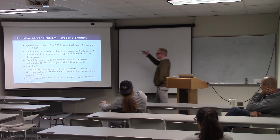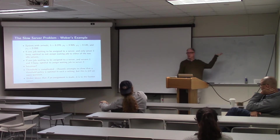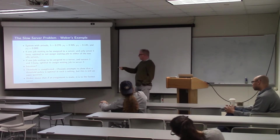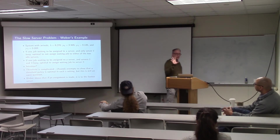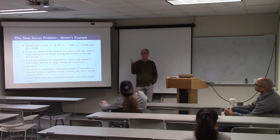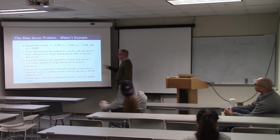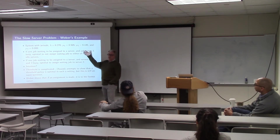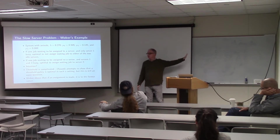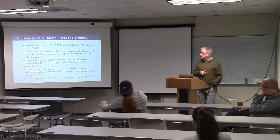So this threshold, if it exists, is complicated — it's not only on the number of jobs in the queue but depends on the other servers. If I have a hundred servers, this can become very combinatorially complicated. Weber shows that if an assignment is made, it's always made to the fastest server. The problem is it doesn't tell you whether to make an assignment or not for a waiting job. This is a nice open problem — showing that the threshold policy works. People don't understand exactly why this problematic behavior occurs.